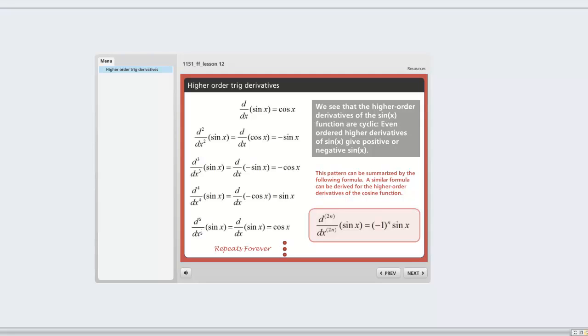In the gray box here you'll see that it says we see that the higher order derivatives of the sine function are cyclic, and then even ordered higher derivatives of sine give positive or negative sine x. You'll see the second derivative of sine gives negative sine x, the fourth derivative of sine gives positive sine x, and then it's cyclic after that, so it keeps repeating that same pattern.